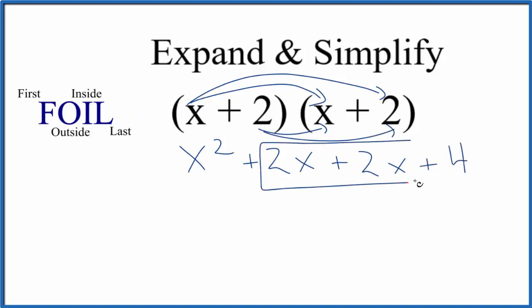Since these two here are the same, we can just add them together. So that would give us x squared plus 4x plus 4.